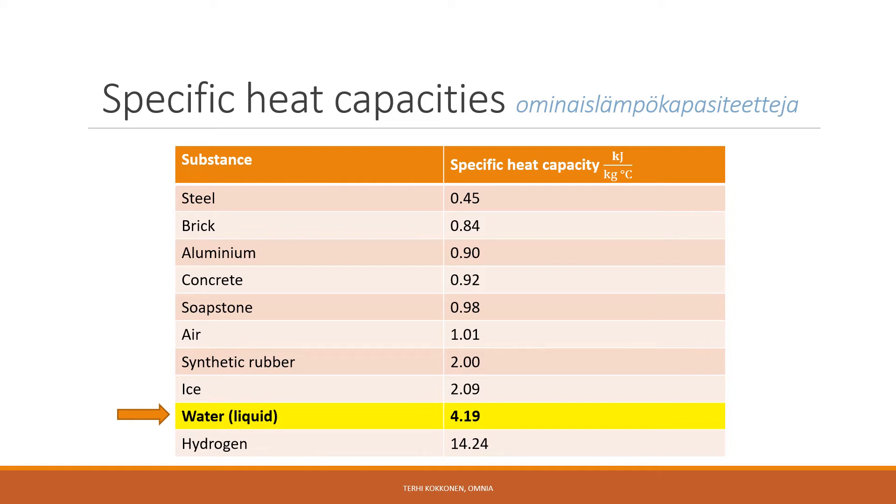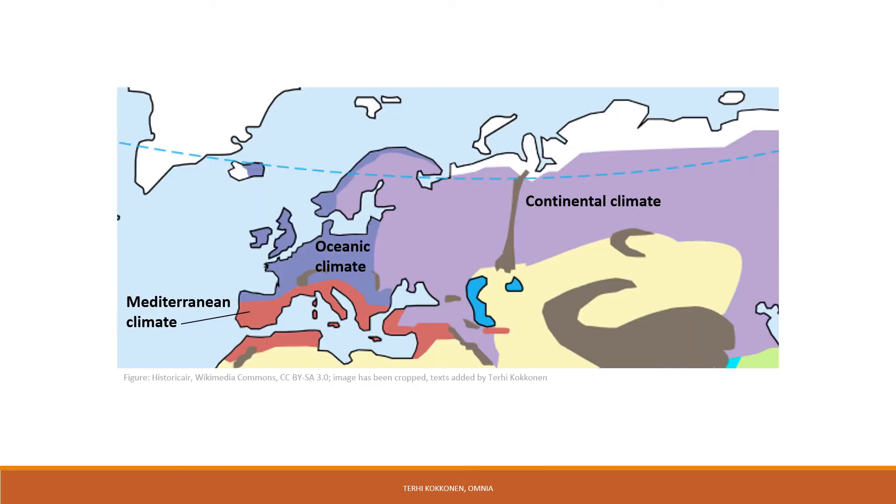Changing its temperature requires a lot of heat. If you have ever experienced the drop in temperature that occurs when traveling from an inland region to the coast during summer, you have experienced the effects of water's specific heat capacity. Water absorbs much of the sun's heat without undergoing a large increase in temperature. That's why oceanic and Mediterranean climates are characterized by narrow temperature ranges.